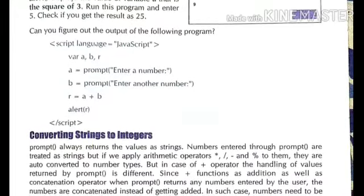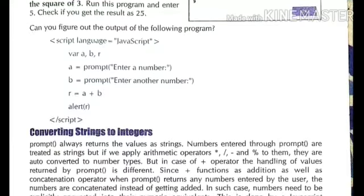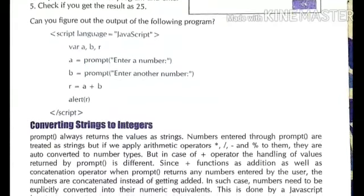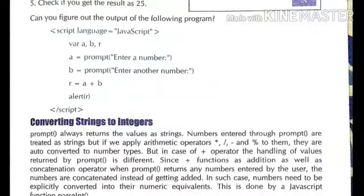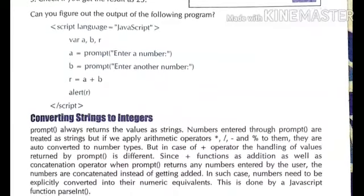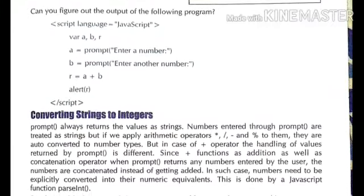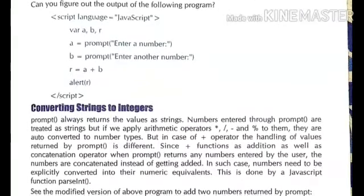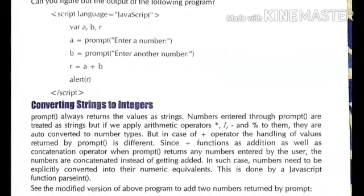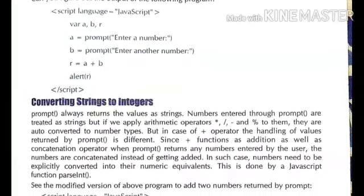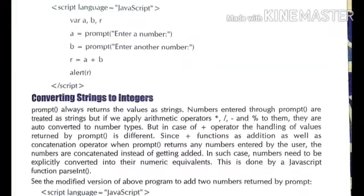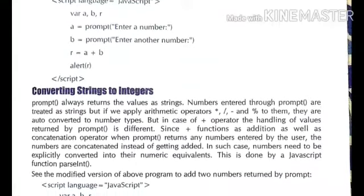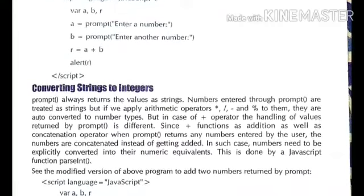Next topic: converting strings to integers. Converting a string value to integer or an integer to string. The prompt function always returns the value as a string — any numeric value entered by the user is changed into a string. Values entered through prompt are treated as strings. But if we apply arithmetic operators like asterisk, slash, minus, and percent to them, they are auto-converted to number types.